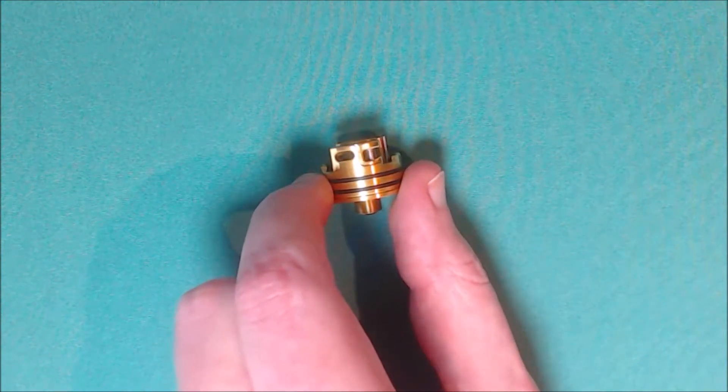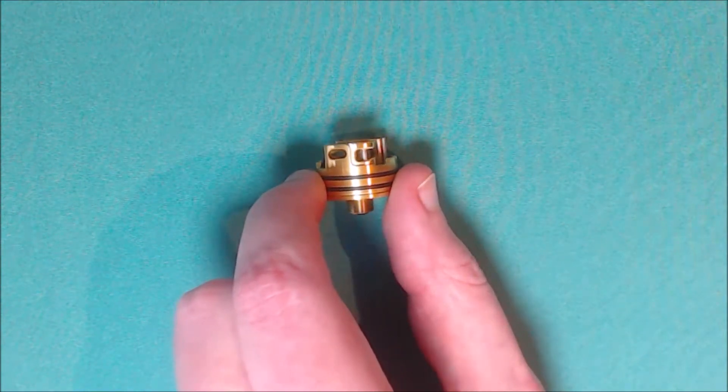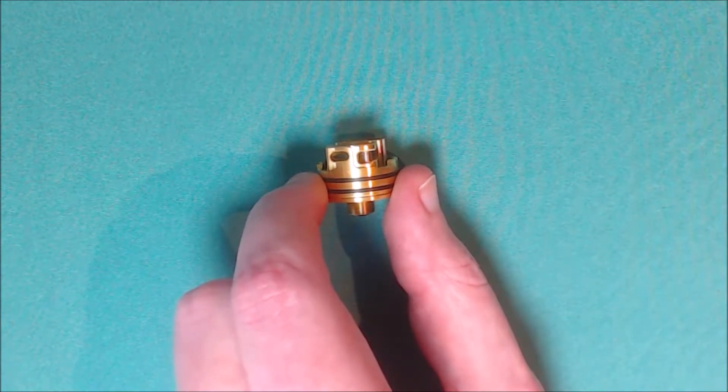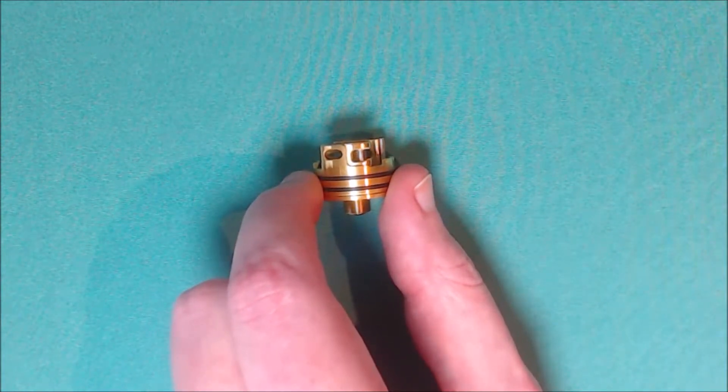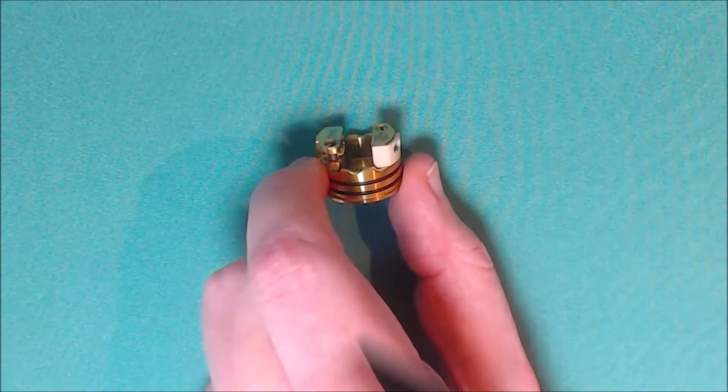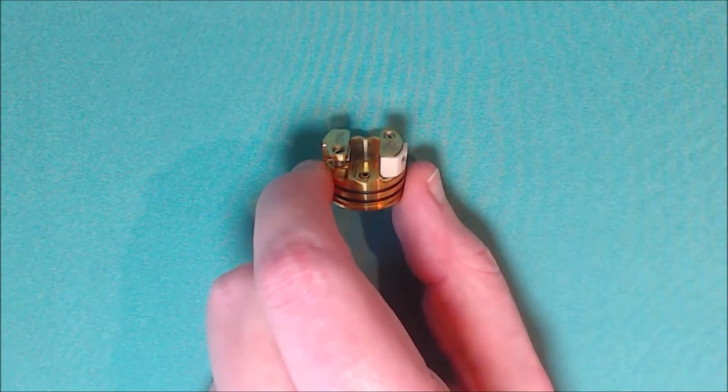The grub screws and the holes for your coils are very big. I've had no problem getting claptons in there or anything. You can fit pretty much any size coil you want in there. And it is space wide between screws inside the deck to put your coil in.